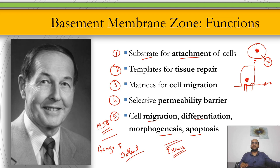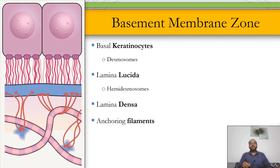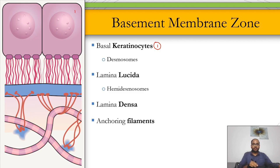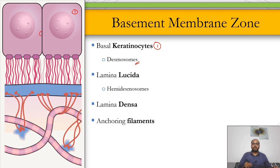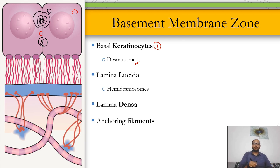The basement membrane zone consists of four major zones. Zone one is the basal keratinocytes of the stratum basale, where we see desmosomes — these are cell-to-cell connections. Here you can see desmosomes in between cells; these are the areas where a cell is attached to its neighbors.